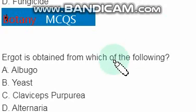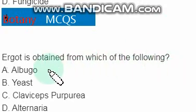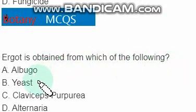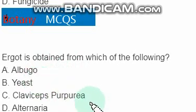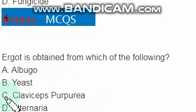Ergot is obtained from which of the following? Not Albugo, not yeast — the right option is Claviceps purpurea. This is the correct answer.